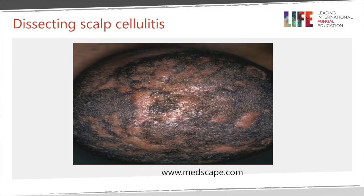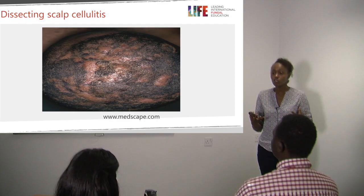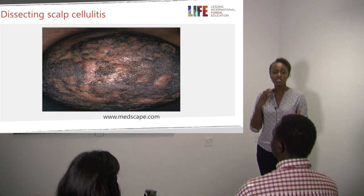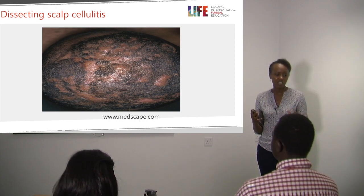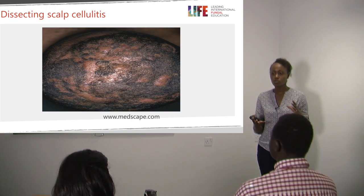Dissecting scalp cellulitis is a difficult differential when you have a kerion and are wondering if it's a scalp cellulitis. The biggest differentiating factor is pain — a scalp cellulitis or scalp abscess will be really tender, and the patient will be febrile and septic, with marked lymphadenopathy, fever, and significant tenderness.